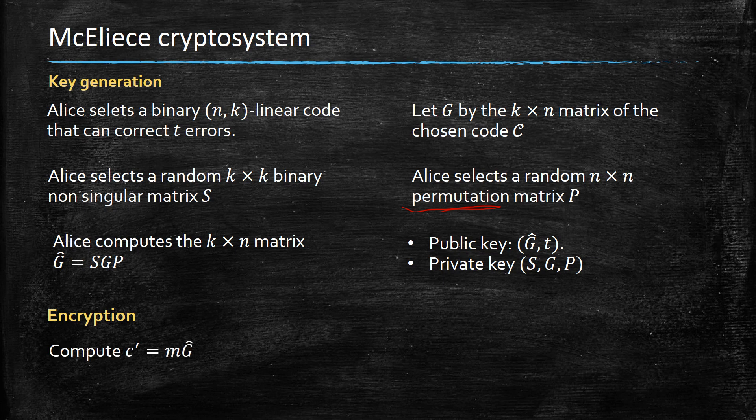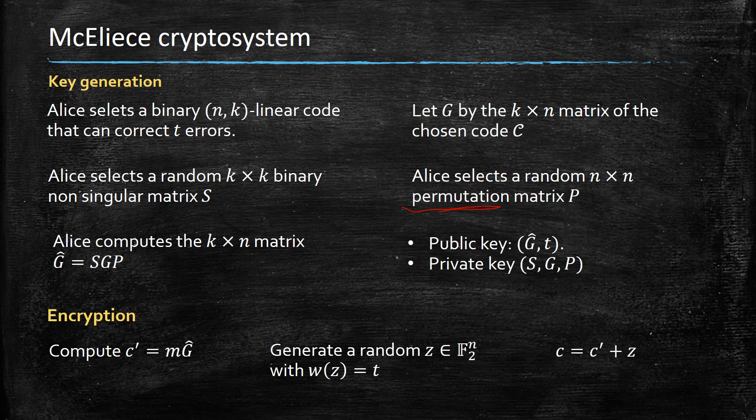Here is the encryption. We compute C-prime which is M, the message, times G-hat, and we create a random vector of Hamming weight T and add it to create our ciphertext.